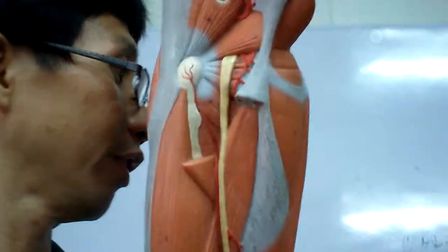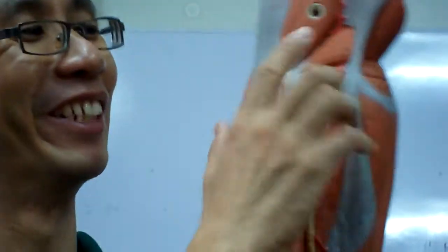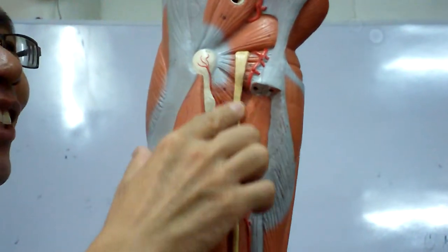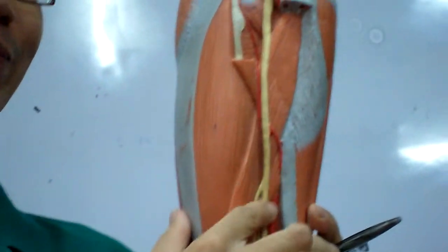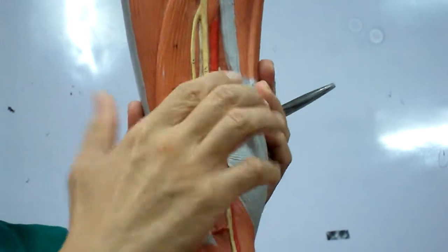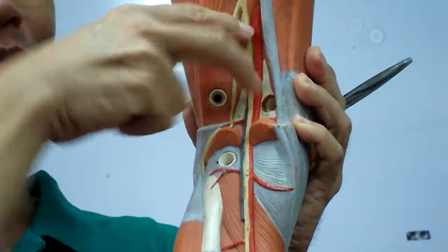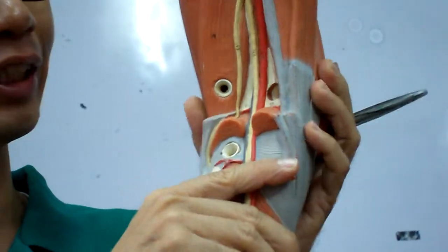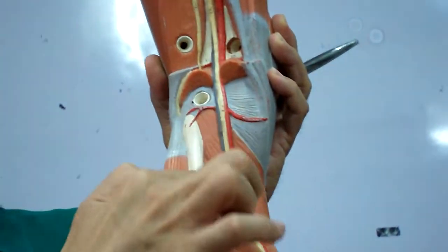You have the largest nerve. There you have your sciatic nerve. The sciatic nerve at the lower third of the thigh divides into two. So one that goes behind the leg.